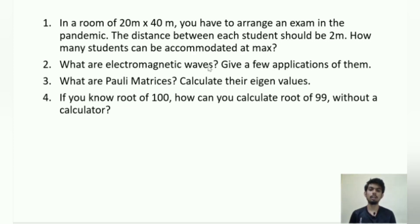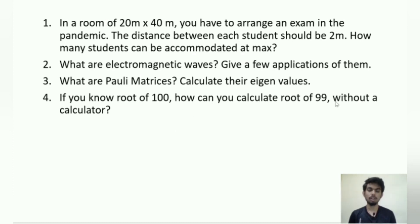They also asked what electromagnetic waves are and to give a few applications — a fairly easy question. Then they asked about Pauli matrices and to calculate their eigenvalues. Pauli matrices are not typically taught in undergraduate courses but you can look them up; finding eigenvalues is a straightforward task. Another question was: if you know √100 = 10, how do you calculate √99 without a calculator? This can be answered using the Taylor series expansion, and I suggest practicing questions like this as they are very typical in interviews.